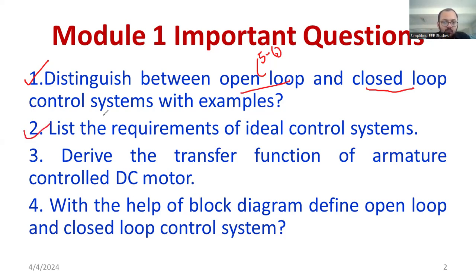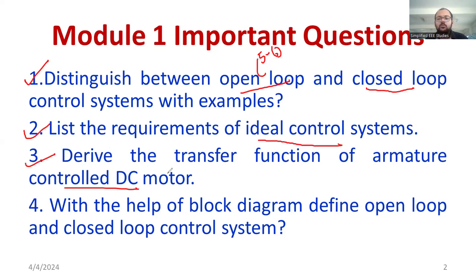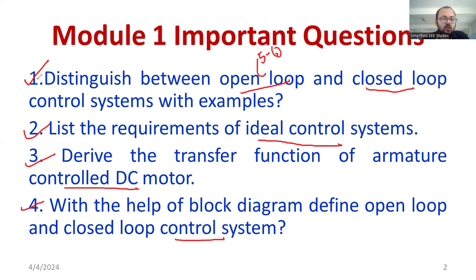The second question is: list the requirements of an ideal control system, like high speed and high accuracy. Third, derive the transfer function of an armature-controlled DC motor — with a diagram, you define the transfer function. I have already made a video on this derivation and will share the link in the description. Also, with a neat block diagram, define the open and closed loop control system — this is a repeated question I have seen many times.